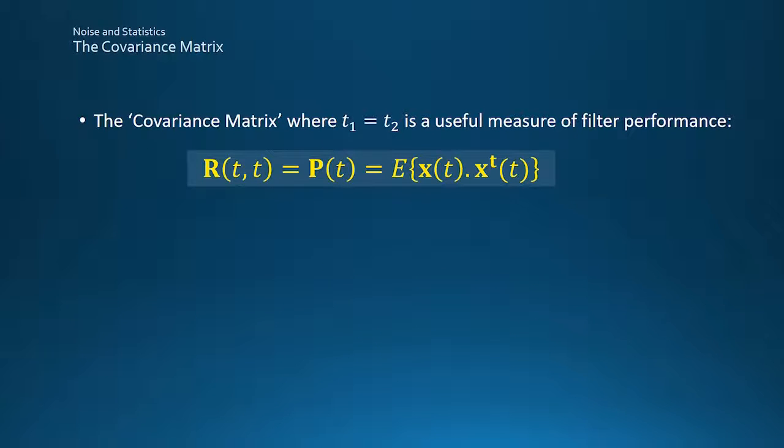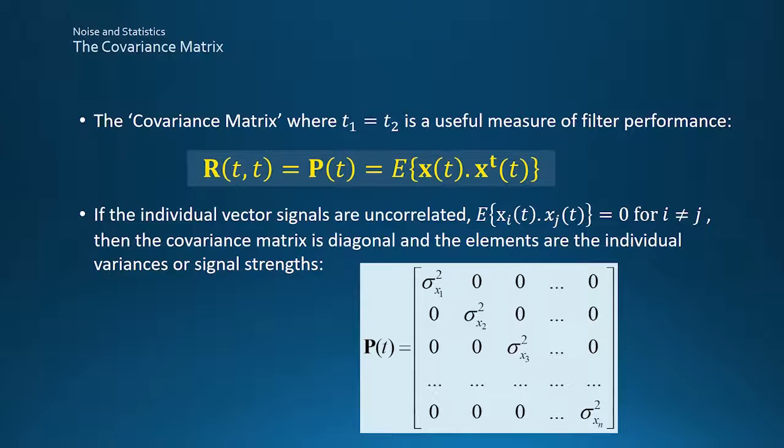Similarly, the covariance functions become matrices, and if the processes are zero mean, the covariance function is the same as the correlation function. Furthermore, if the time instances t1 and t2 are the same, that is with zero time shift, then all the terms become variances. This special case of the covariance function, often loosely known as the covariance matrix, labeled P here, is very useful as a measure of performance in filtering and prediction applications. The diagonal terms give the individual signal strengths, while the off-diagonal cross-correlations are zero if the signals are uncorrelated. For example, in a Kalman filter estimating a vehicle position, the trace of the error covariance matrix, adding up all its diagonal elements, is a measure of the total error in all of the components of the estimated position.